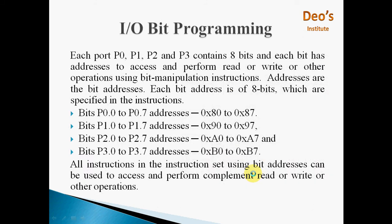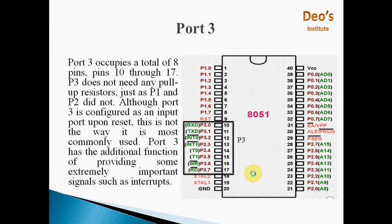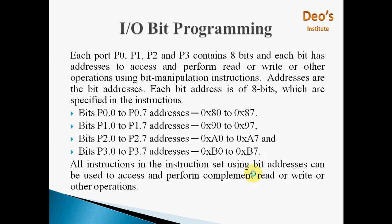Next is IO bit programming. Just now we have seen all the ports P0, P1, P2, P3, their pin numbers and their functions, their dual functionality. Now we will see how these ports can be programmed. Each port P0, P1, P2, P3 contains 8 bits and each bit has address to access and perform read or write or other operations using bit manipulation instruction. Addresses are the bit addresses. Each bit address is of 8 bits which are specified in the instruction.